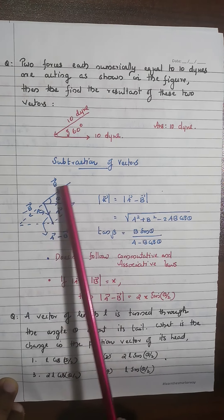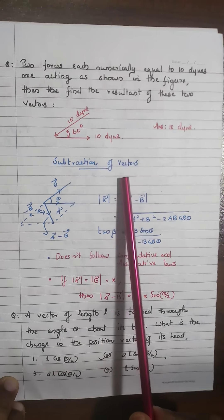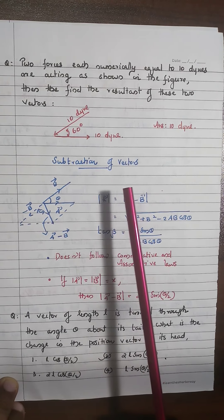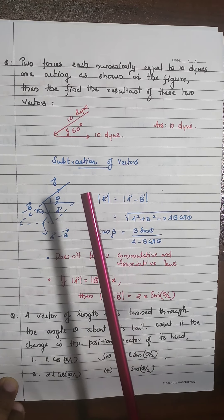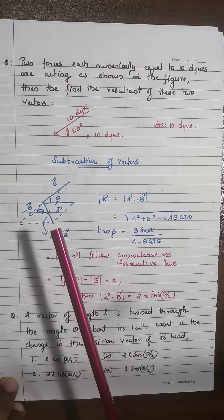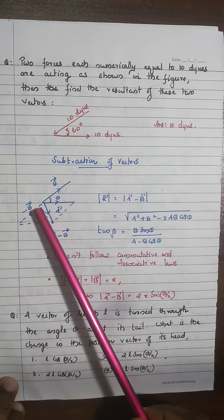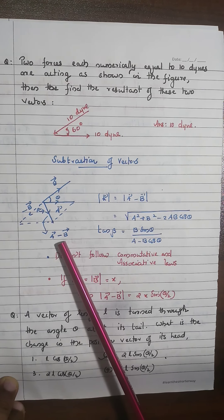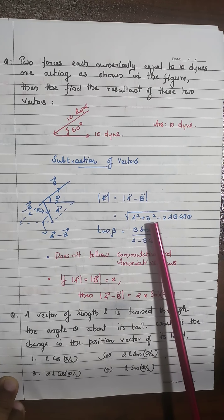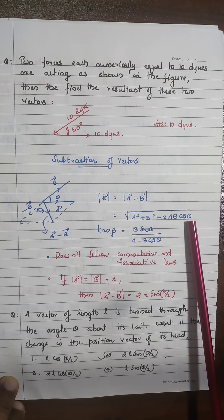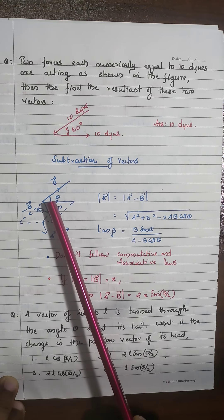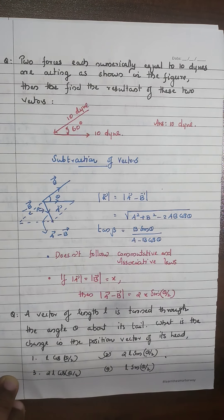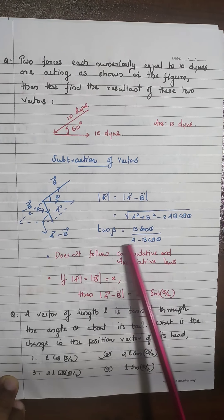Subtraction of vectors: vector subtraction can be expressed as an addition process. To subtract B from A, write A − B = A + (−B). First find −B, then add it to A. The magnitude is √(A² + B² − 2AB cosθ), and the resultant angle β with respect to vector A is given by tan β = B sinθ / (A − B cosθ). Keep in mind: subtraction does not obey the commutative or associative laws.